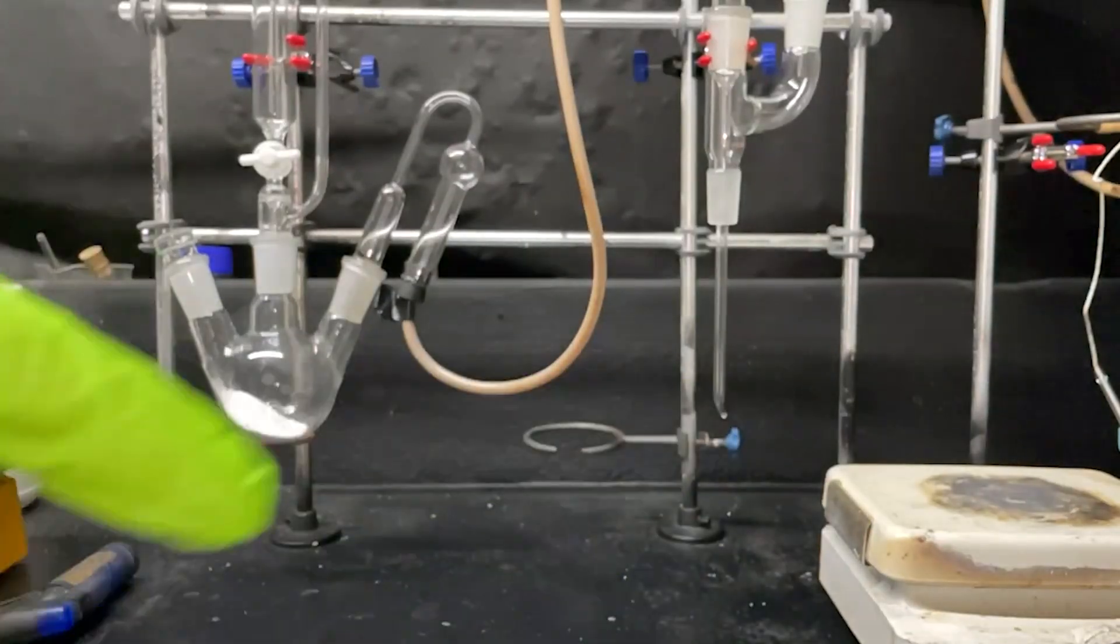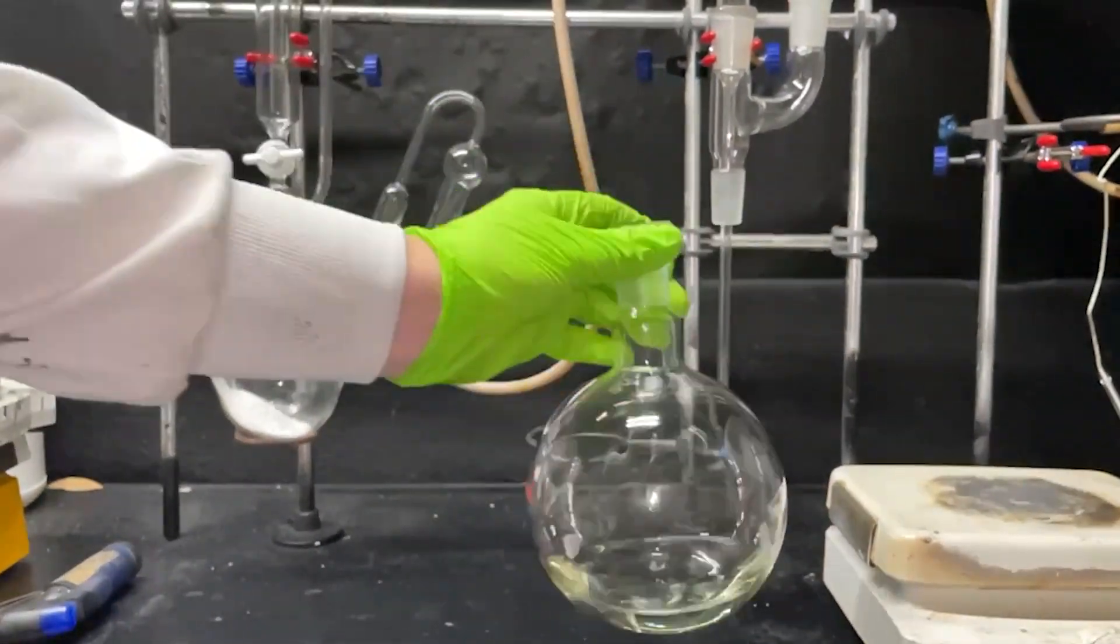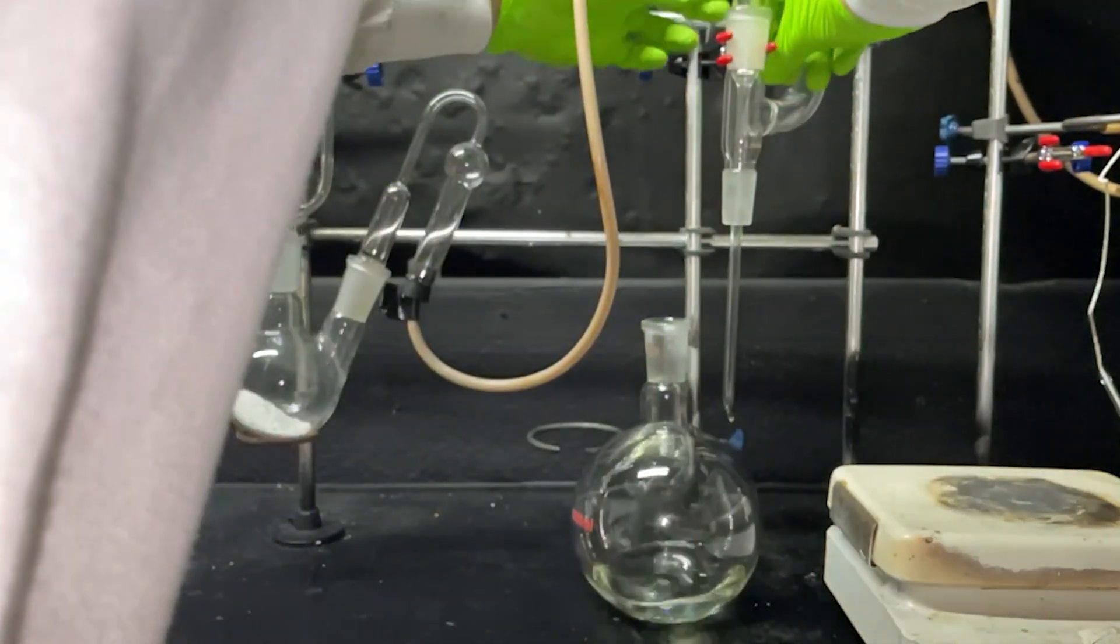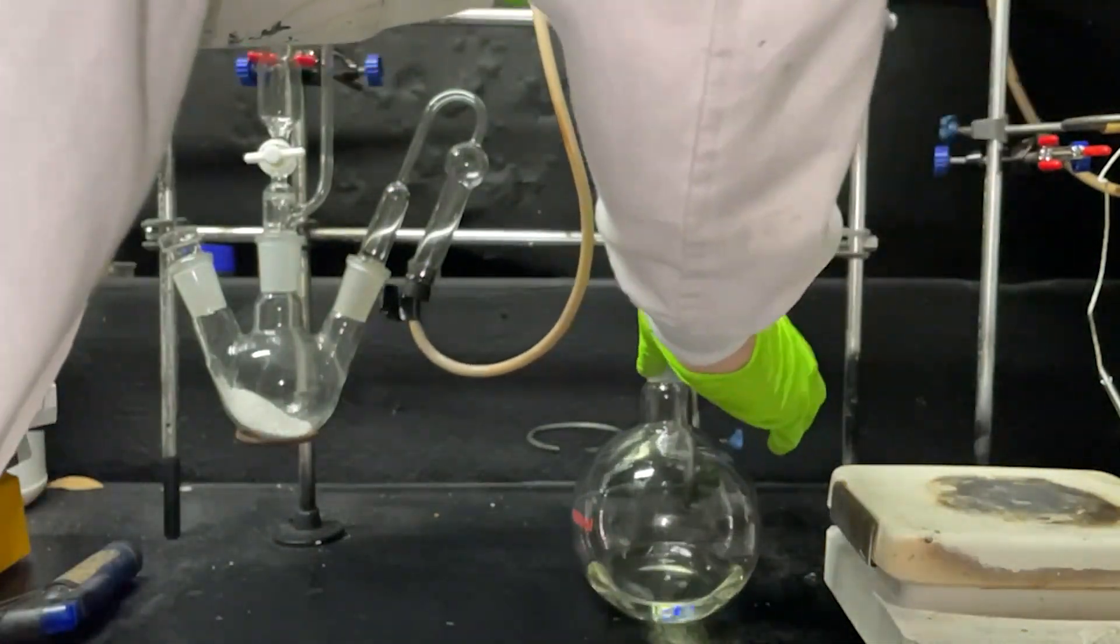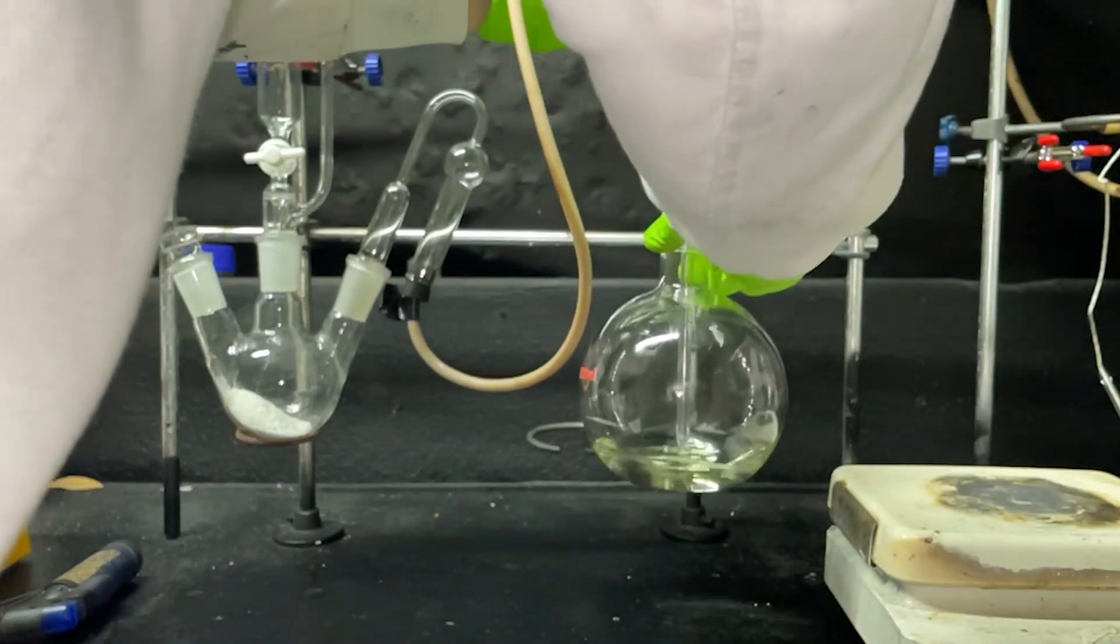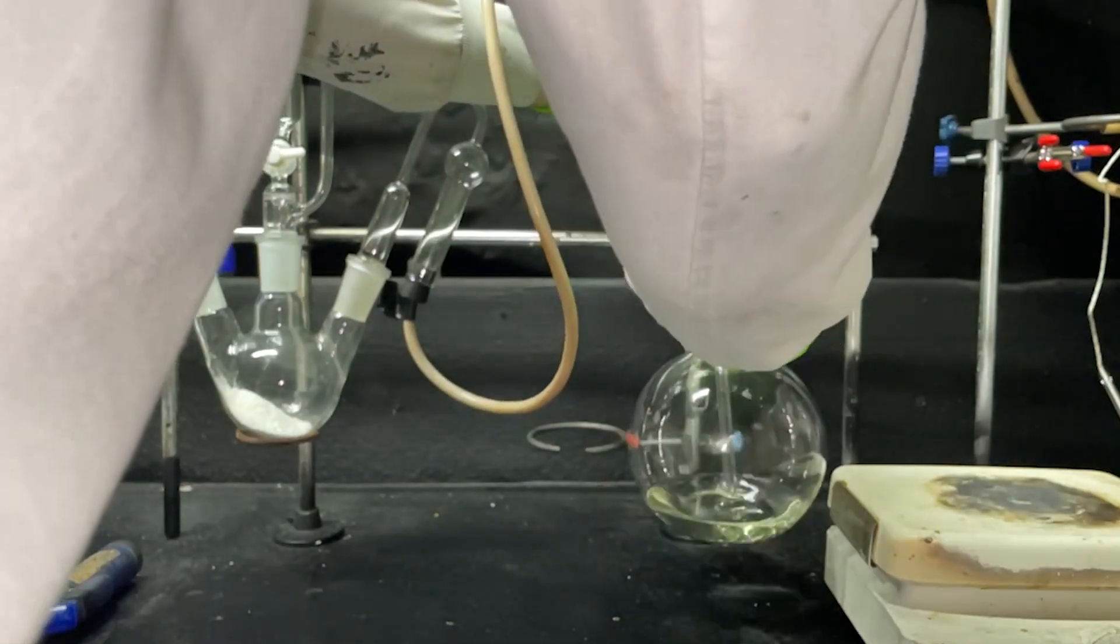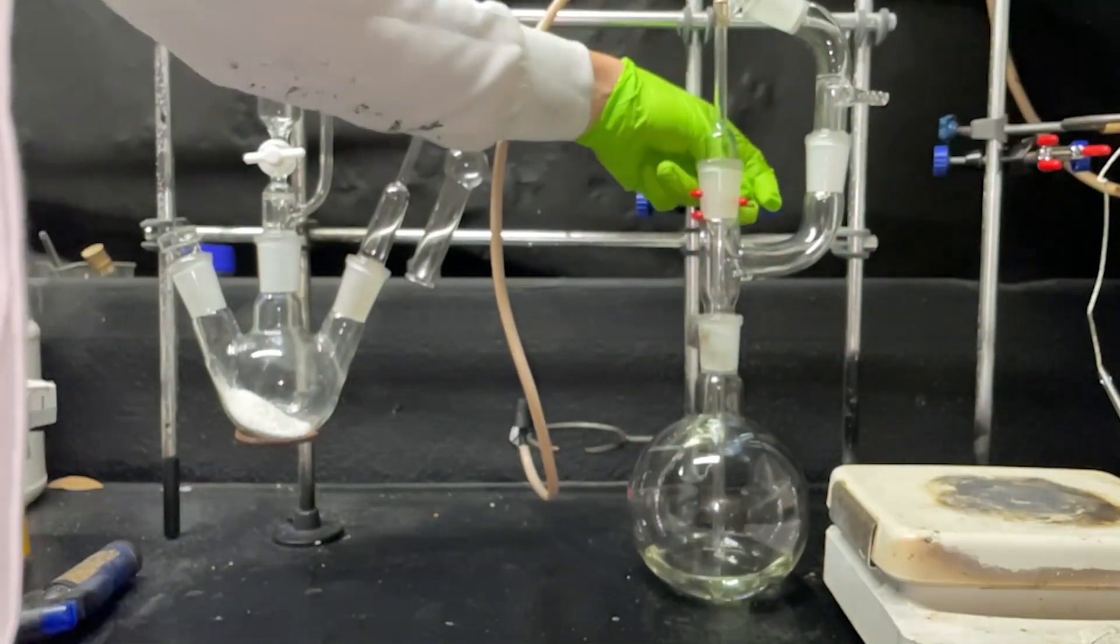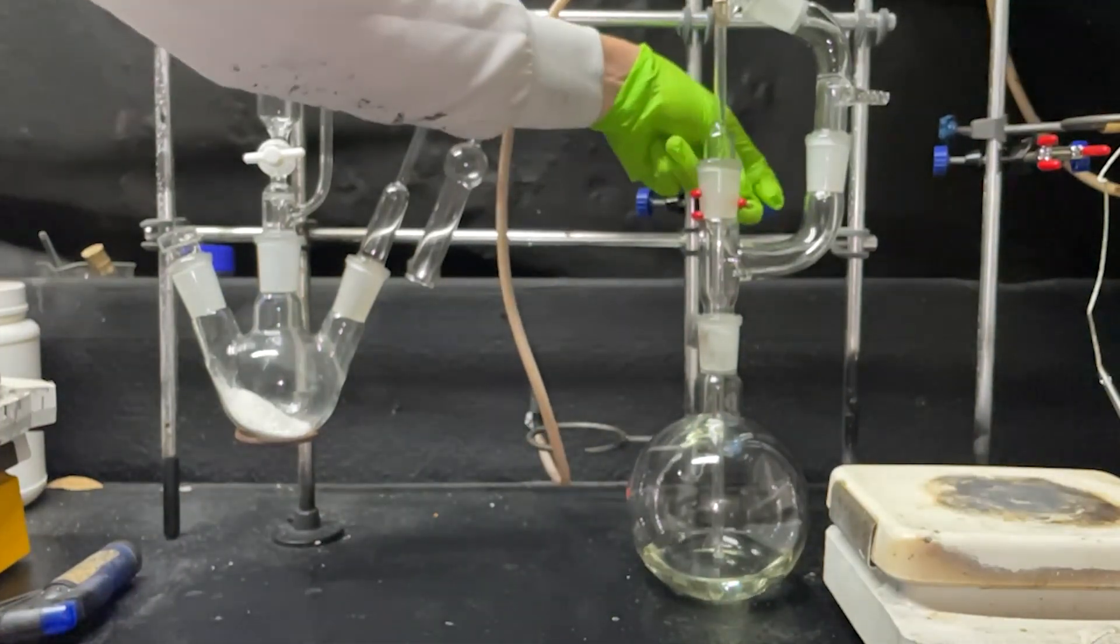Okay we're almost ready to start making our mace but the next step we got to do is attach our bubbler to our flask. Get that open for me. Attach our bubbler to our flask containing our acetic acid and acetophenone.